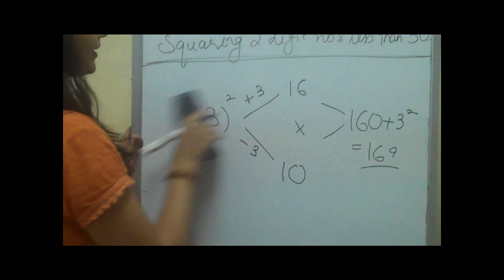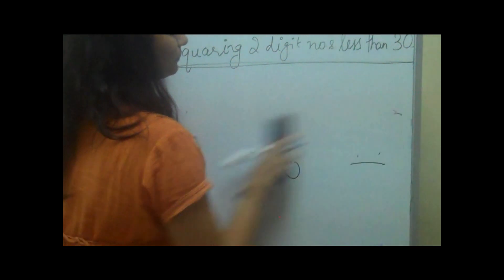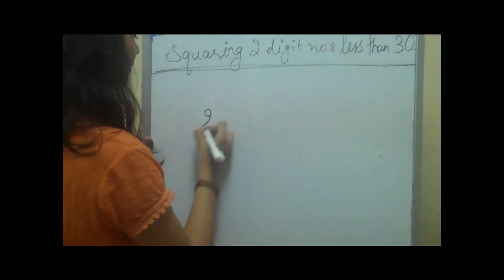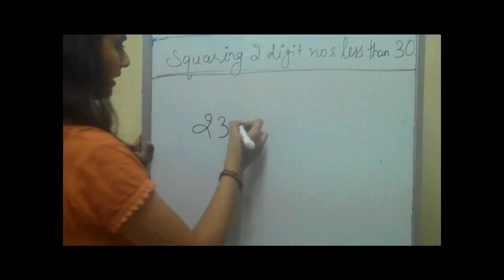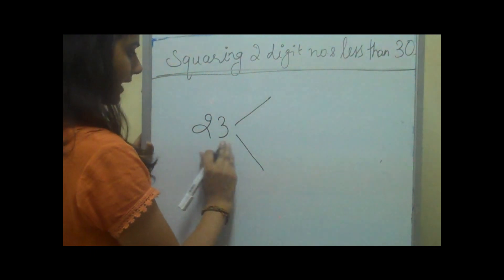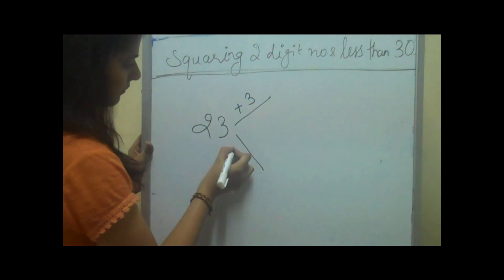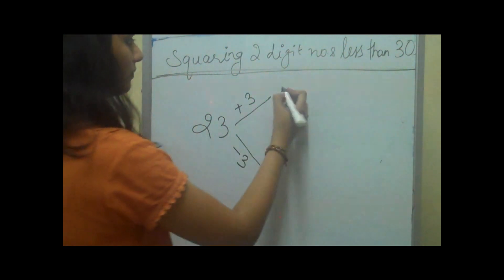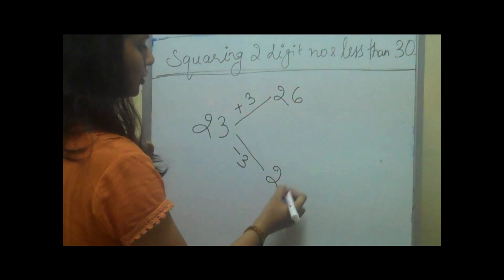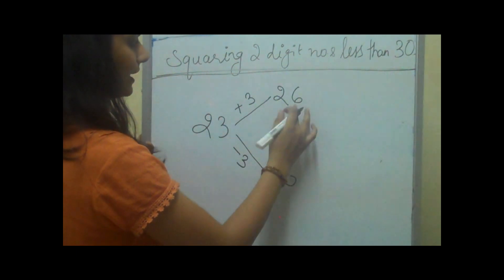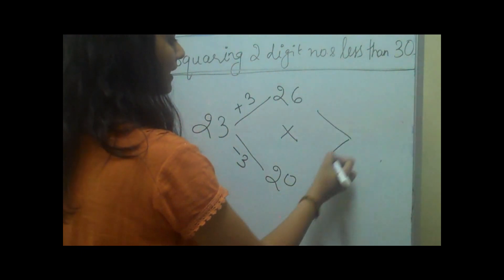Let's take another example. If we have the number 23 and we want to square it, again with the unit digit we'll add 3 here and subtract 3 here, which makes 26 and 20. We'll multiply these two numbers.